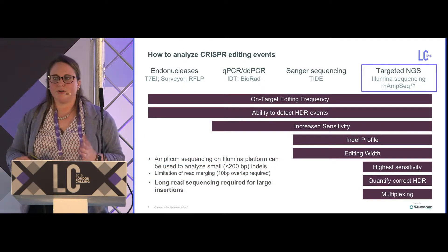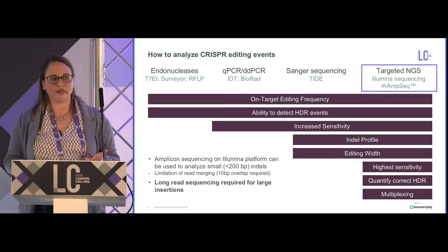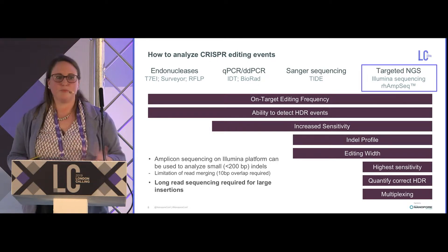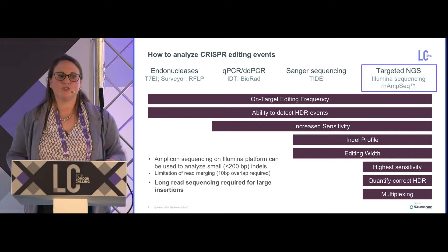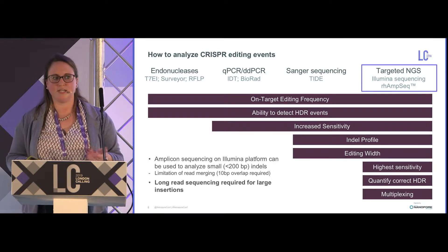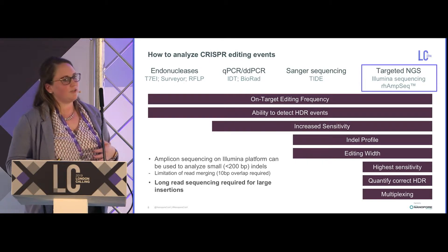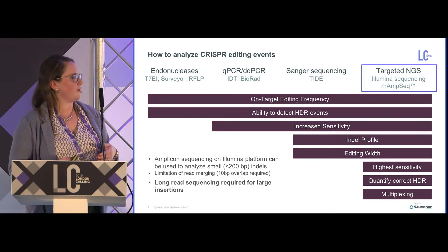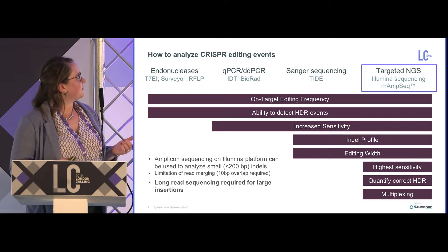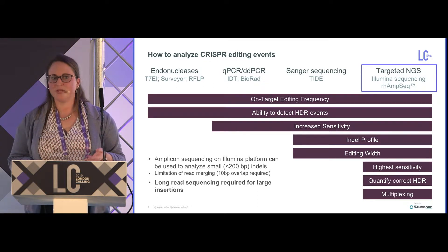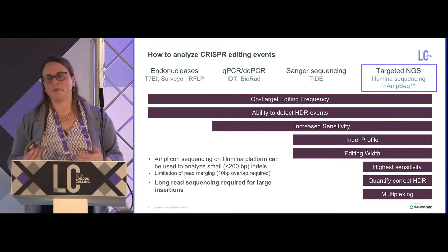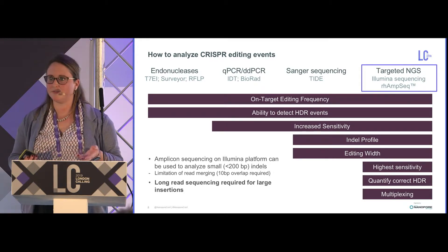Various analysis methods exist for looking at CRISPR editing. To estimate on-target editing frequency or show a fraction of HDR insertion, you can use PCR to amplify around the region of interest and digest with a T7 or Surveyor endonuclease that recognizes indels after forming heteroduplexes. You can also use HDR to create a novel restriction enzyme site and PCR amplify. But these don't tell you the true editing happening in cells. Droplet digital PCR and qPCR increase sensitivity for these events.